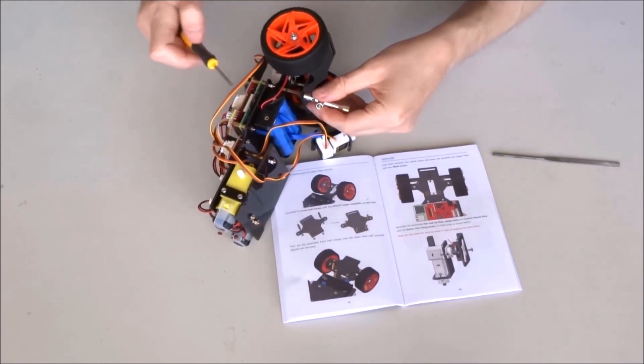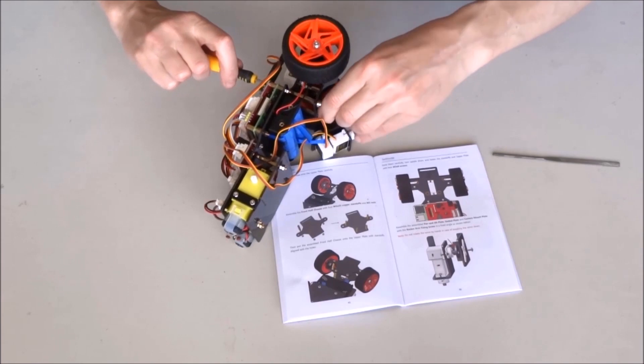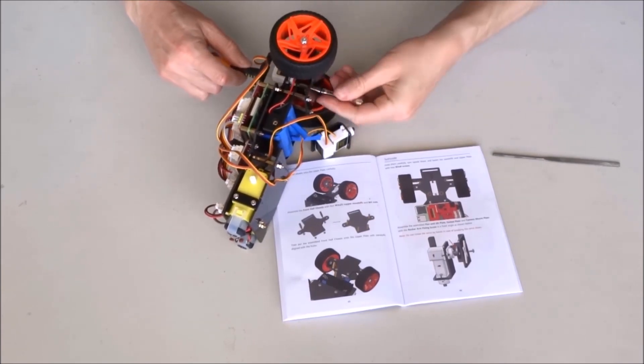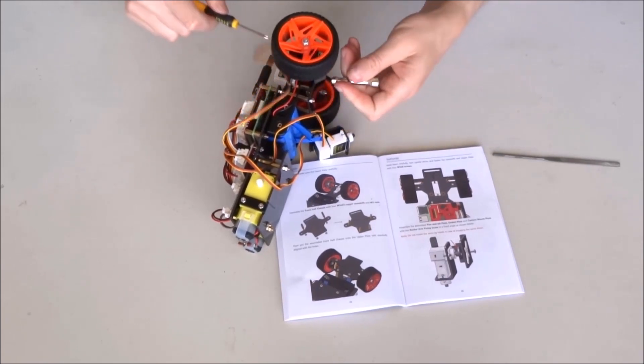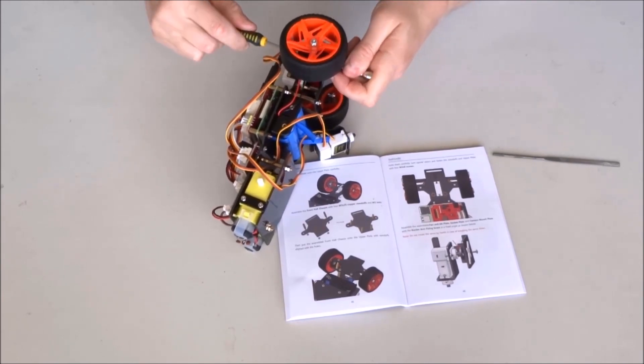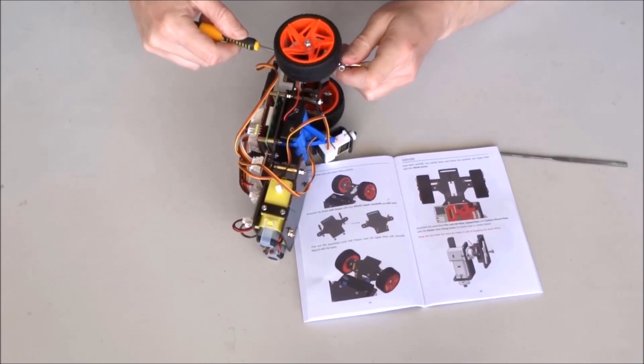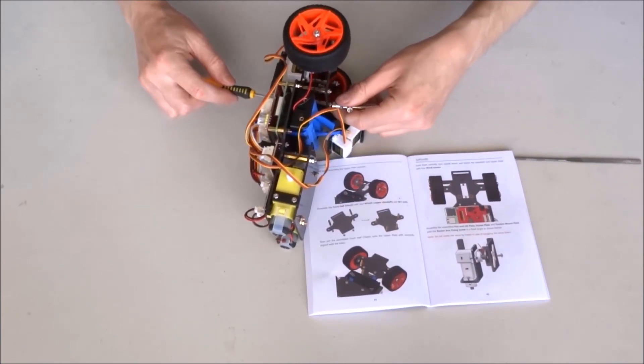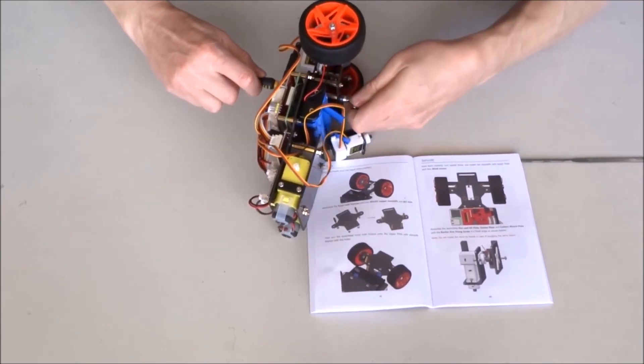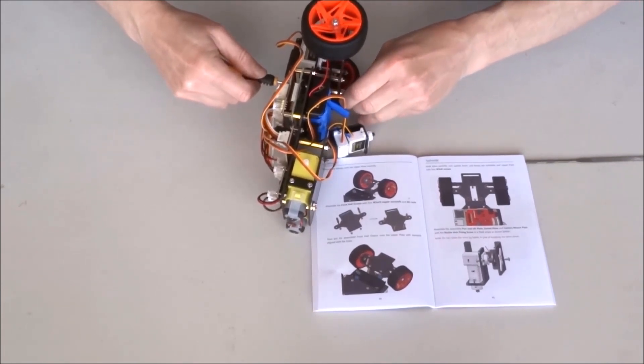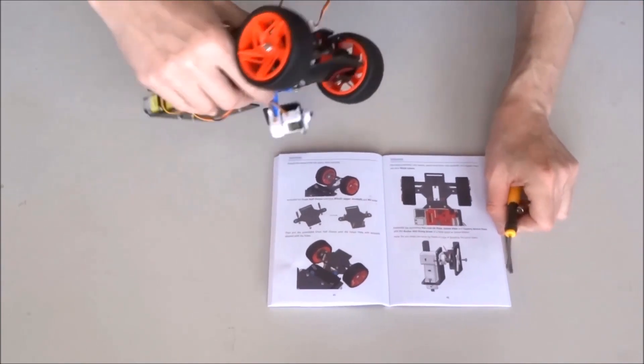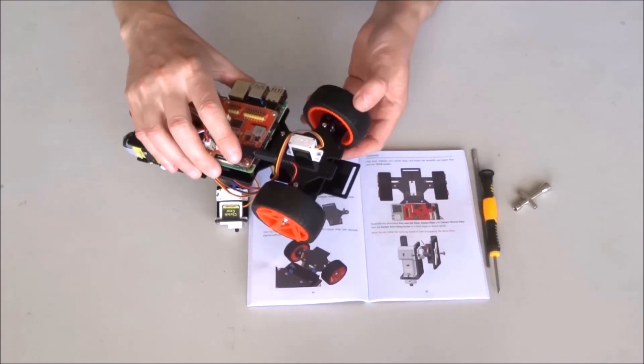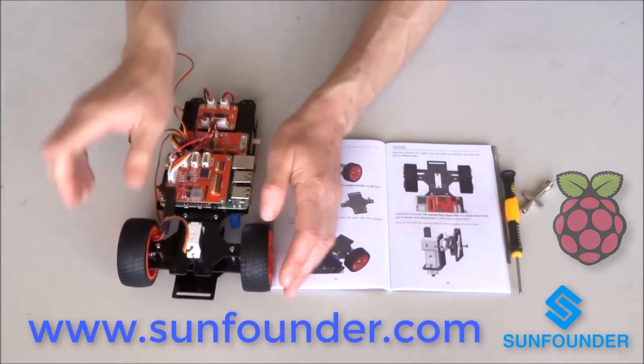If you remember in the previous steps we left these nuts not fully tightened. Now I can go ahead and tighten everything completely. This step is completed and as you can see now our robot car has steering wheels.